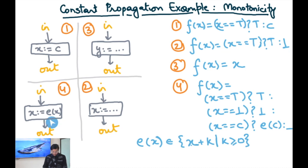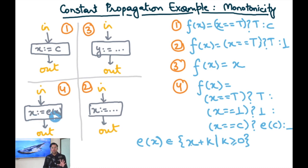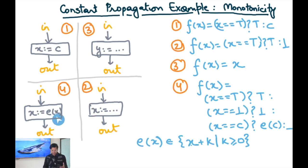The special case is where the right-hand side of the assignment is purely a function of x, such as x := x + 1. In this case, if the input value is a constant then we want the output to be the expression E evaluated on that particular constant.